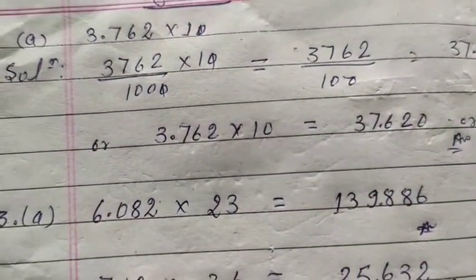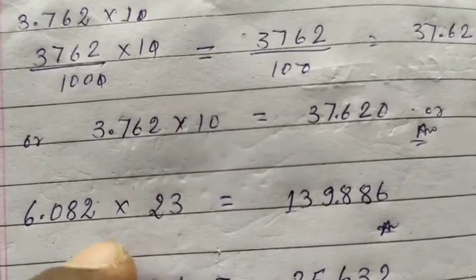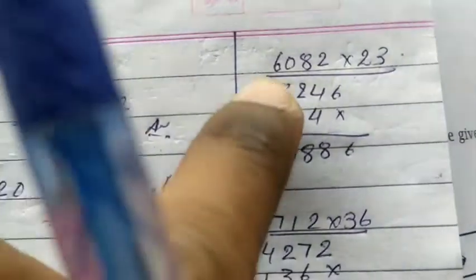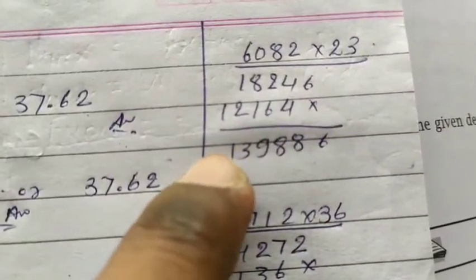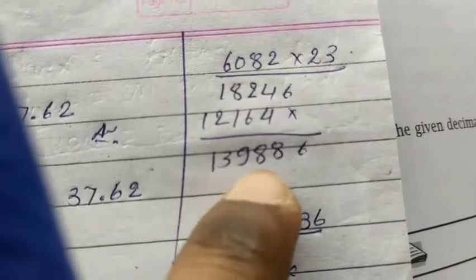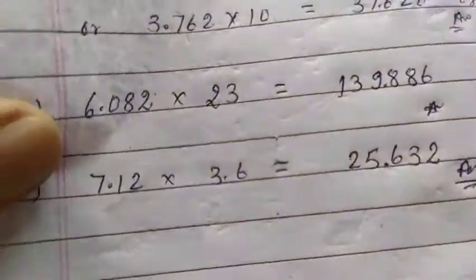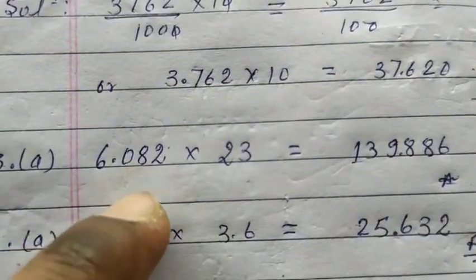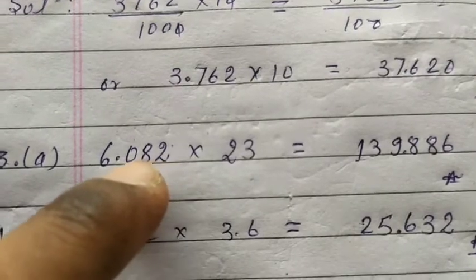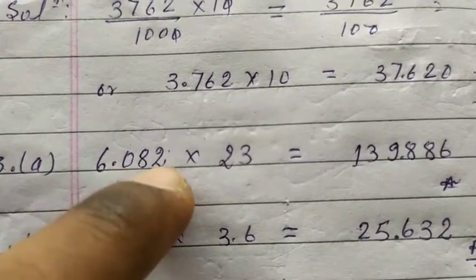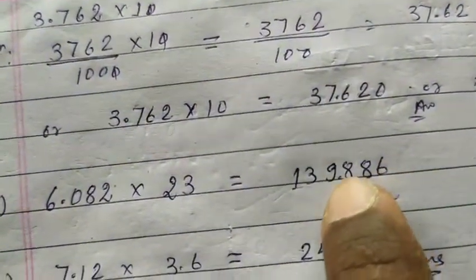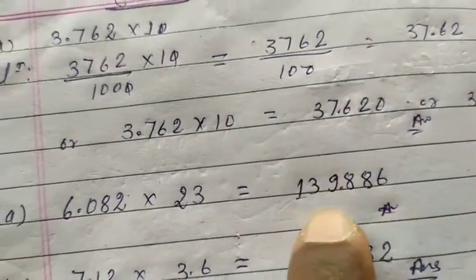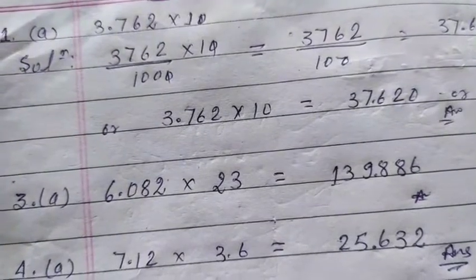Question three is 6.0282 multiplied by 23. We multiply 60282 by 23 as whole numbers and get 1,386,486. Now we remember that in one of the numbers the decimal was before three digits. So in the product we place the decimal three digits from the right — count one, two, three — and we get our answer. It's very simple.